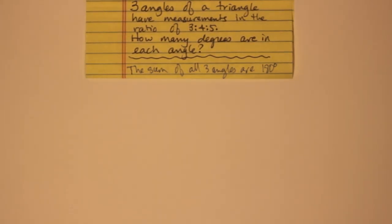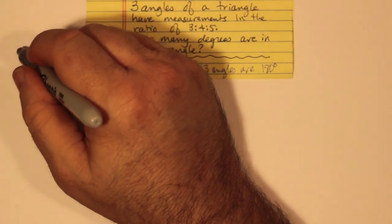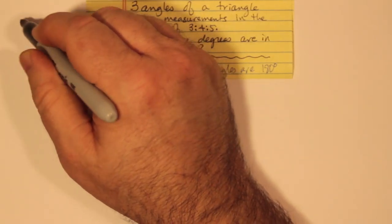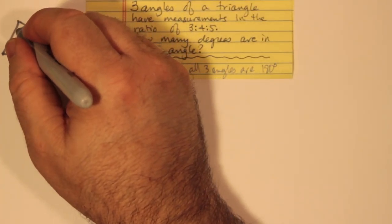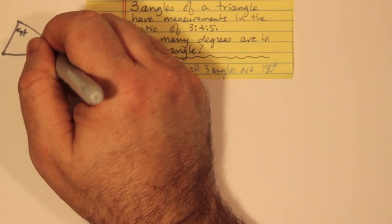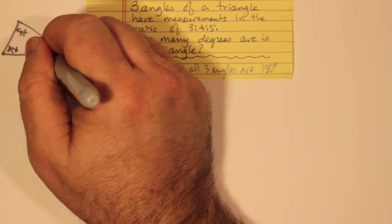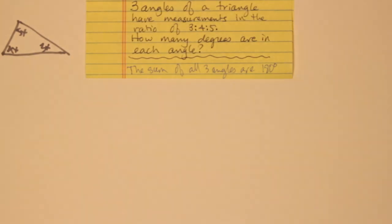But that's like saying, for example, that we have a triangle kind of like this, where we have 5x, 4x, and say 3x, something like that.